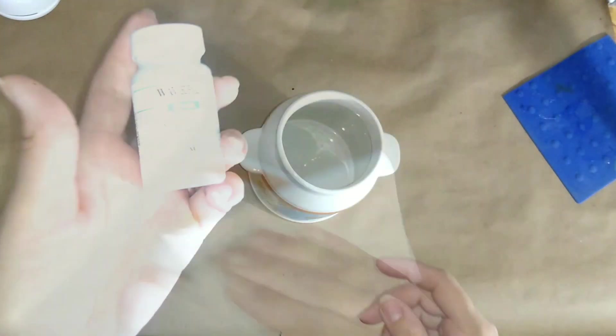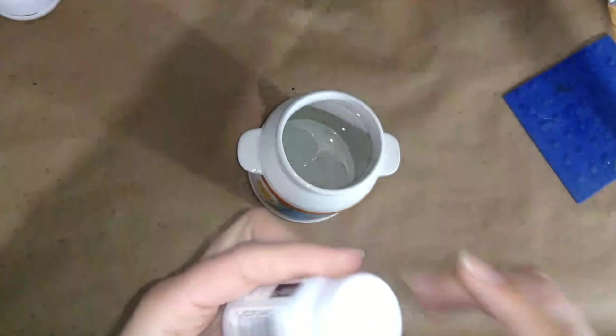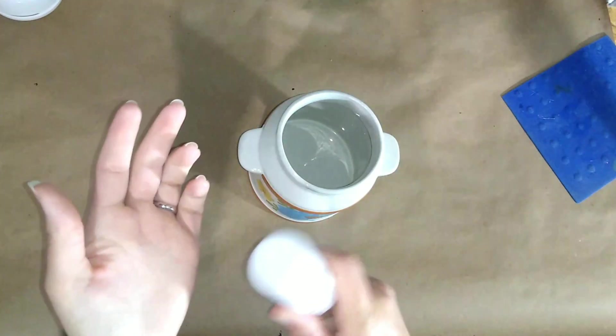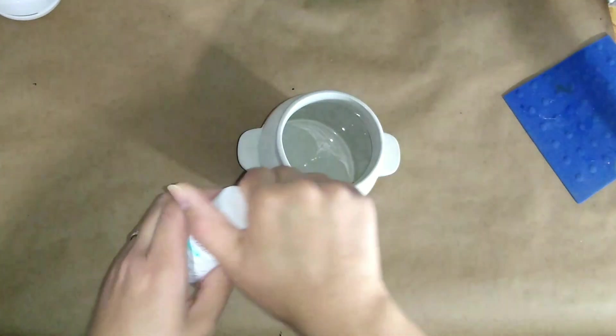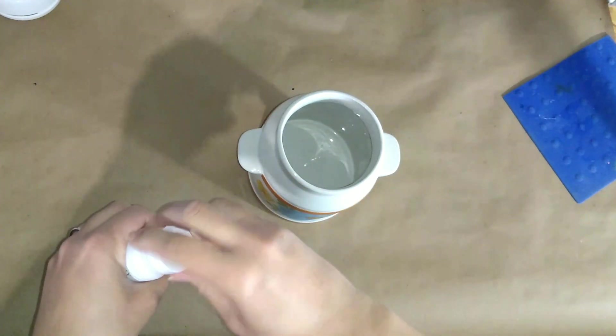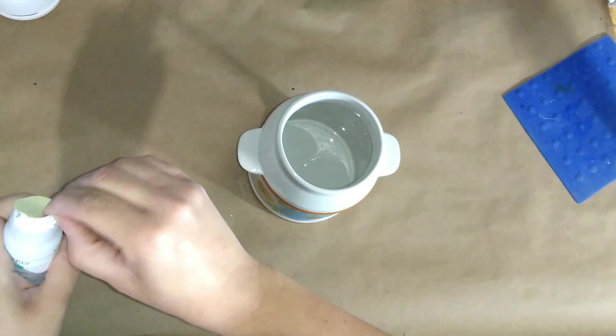I'm going to first start off by cleaning it with some alcohol, and then I'm going to give it a couple of coats of this Waverly white chalk paint. Now generally for something that's glass or ceramic, I would give it a coat of gesso.